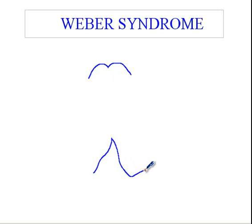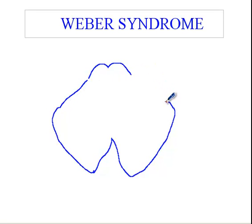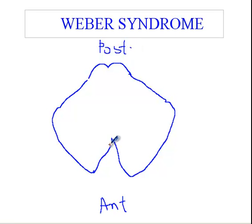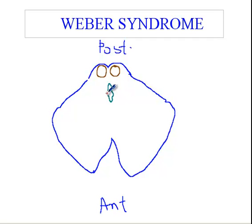This is a rough sketch of the midbrain. This is the anterior part and here is the posterior part of the midbrain. I'll use different colors to illustrate different structures. This is at the level of the superior colliculus, so I'll draw the superior colliculus here. Then we have the aqueduct of Silvius, which is somewhere around here.